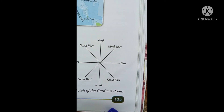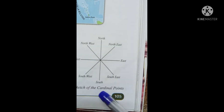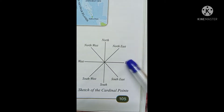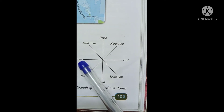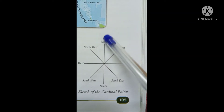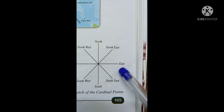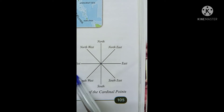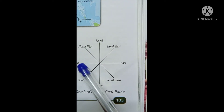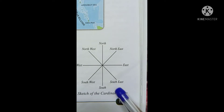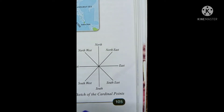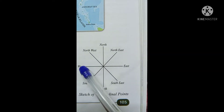When you draw a line from the north to south pole, the right side is east and the left side is west. These four points — north, south, east, and west — are known as the cardinal points.